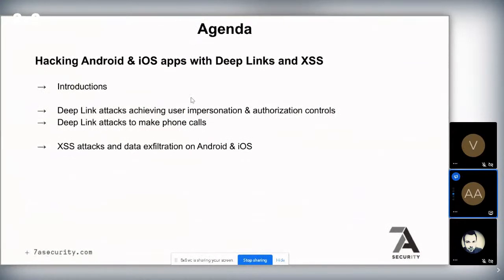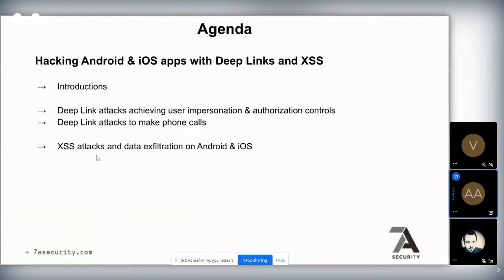We're going to talk about hacking Android and iOS apps with DeepLinks and XSS. First, I'll give a brief introduction, then we'll talk about DeepLink attacks achieving user impersonation and authorization control bypasses, DeepLink attacks to make phone calls, and then XSS against mobile apps — specifically data exfiltration with XSS: how to read local files from the phone and send them to an attacker on both Android and iOS.